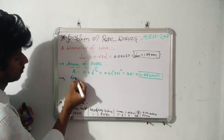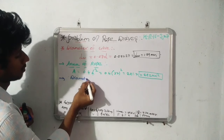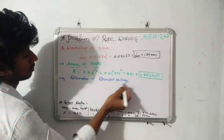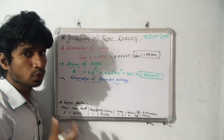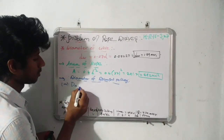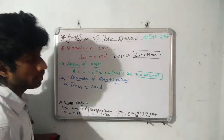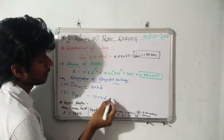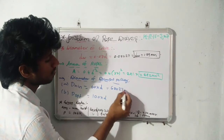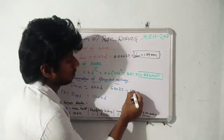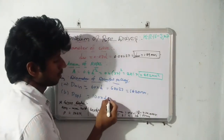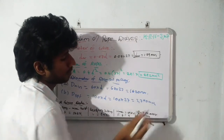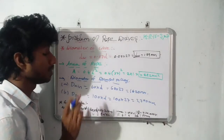Next, find the diameter of drum or pulley. In minimum condition, it is 60 × d = 60 × 27 = 1620 mm. In optimum condition, it is 100 × d = 100 × 27 = 2700 mm. This is about the diameters of drum or pulley in minimum and optimum conditions.